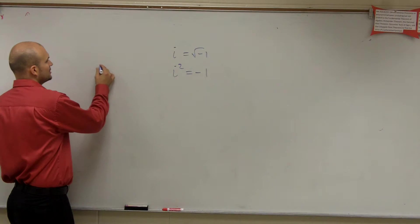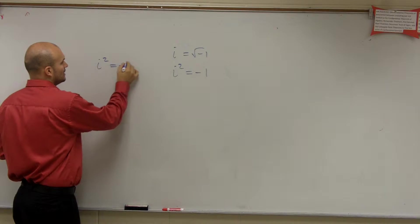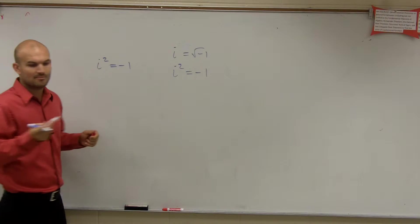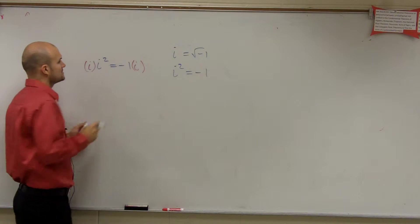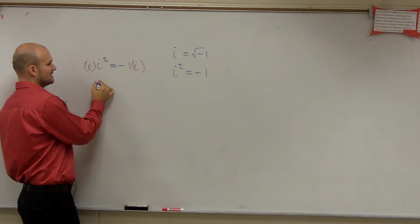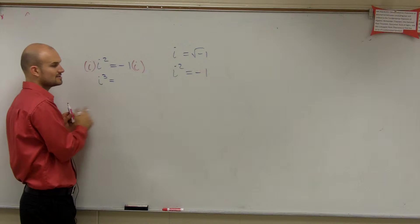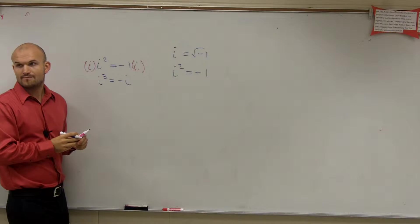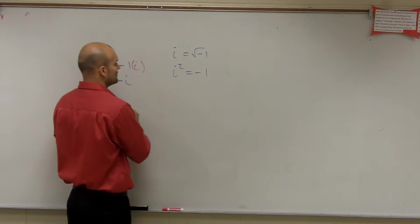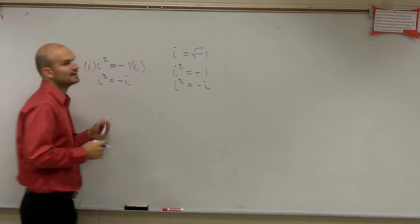So what we're going to do is let's take i squared equals negative 1, and let's multiply it by i on both sides. So i times i squared is going to give me i cubed, negative 1 times i is negative i. See that? Cool, isn't it? So now we can write i cubed equals negative i.